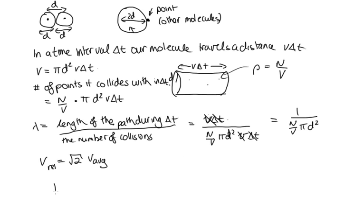So we actually end up with lambda equals 1 over root 2 pi d squared n on v, where d is the diameter of the molecules, n is the number of molecules in the volume v of the gas. And this is the average distance it travels between collisions.